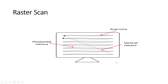Another type is raster scan displays, where pixels are arranged in a rectangular grid called a raster. Information about on and off pixels is stored in a refresh buffer or frame buffer. There are two beam refreshing techniques: horizontal retrace and vertical retrace. The beam starts drawing from the top left, going horizontally row by row. After drawing a row of pixels it performs a horizontal retrace and moves to the leftmost pixel of the next row.